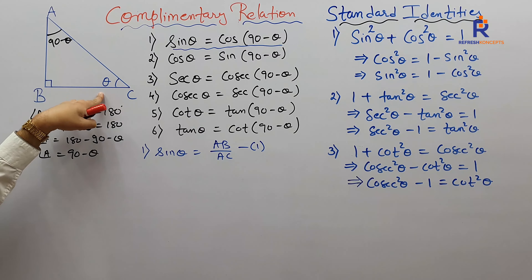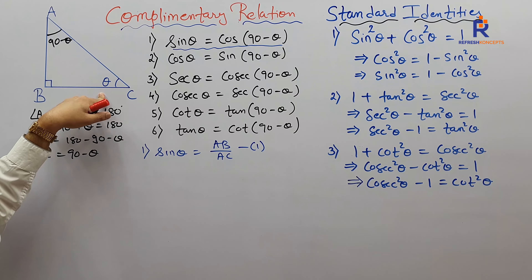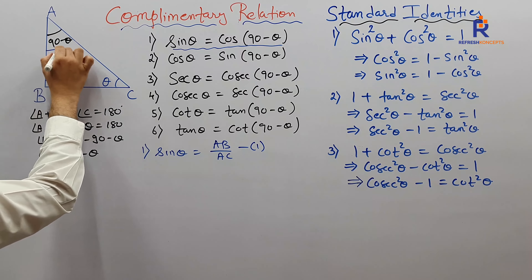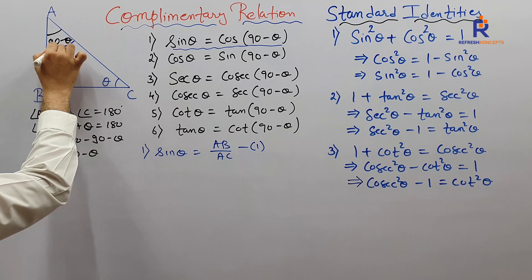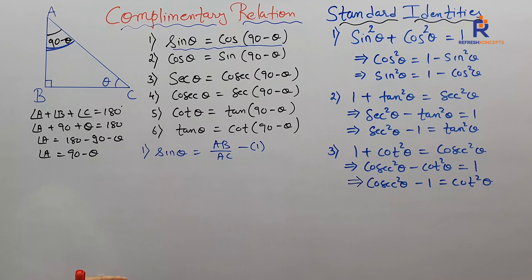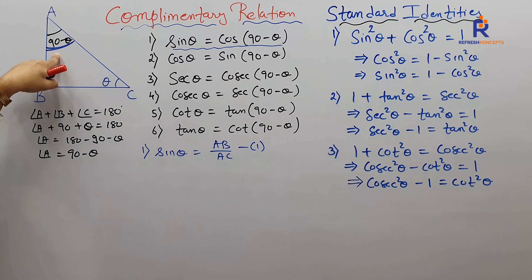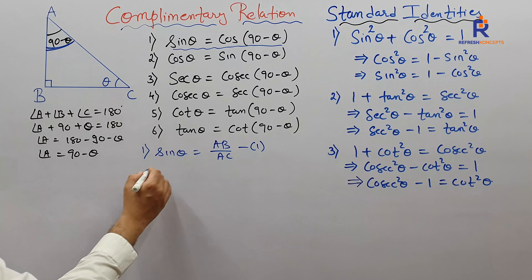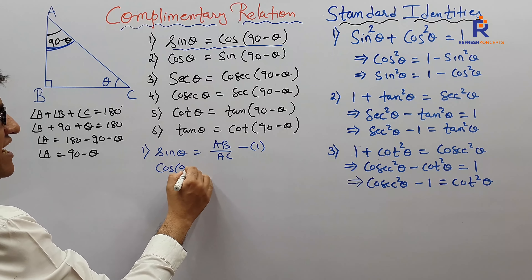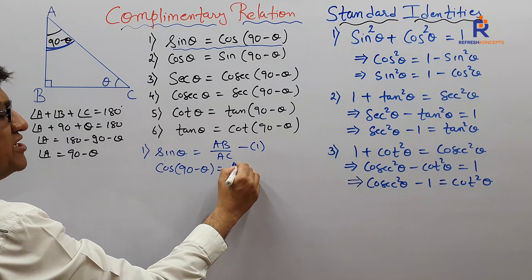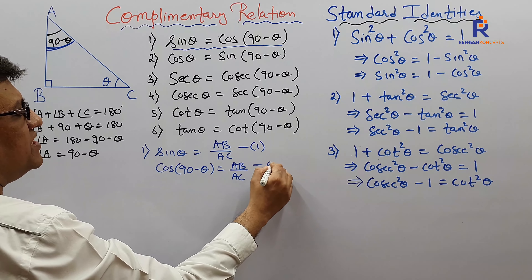When I say cos(90 minus theta), I am not supposed to focus on angle C anymore because my angle has changed to 90 minus theta. So I have to focus on angle A. As per the definition, cosine is adjacent upon hypotenuse. Adjacent to 90 minus theta is AB, and the hypotenuse is AC. So cos(90 minus theta) equals AB upon AC — this is equation number two.